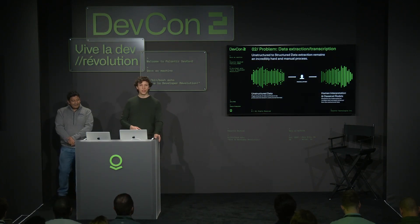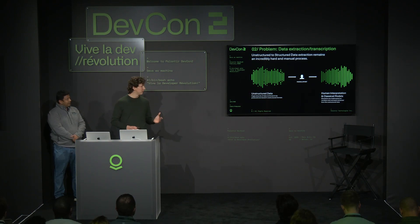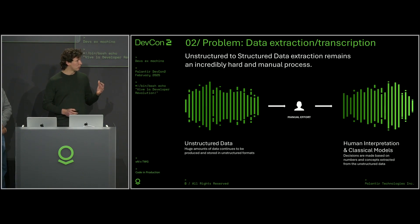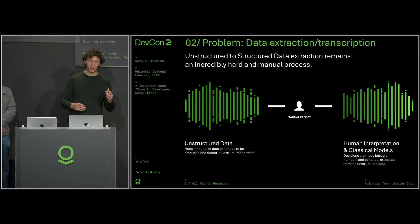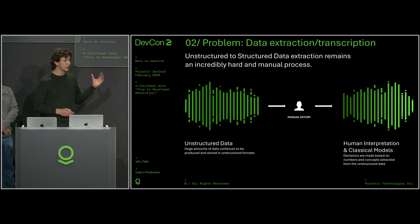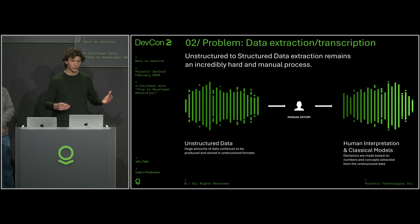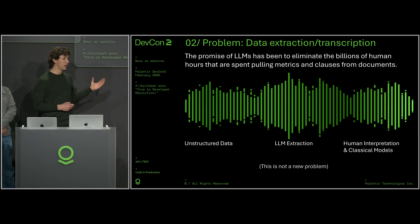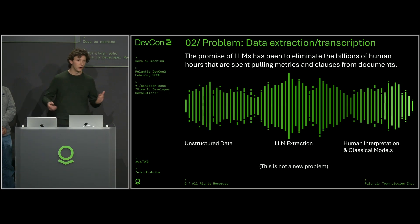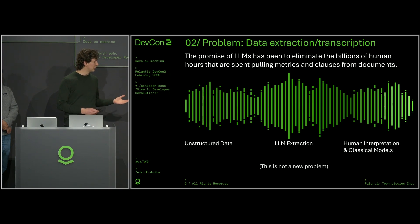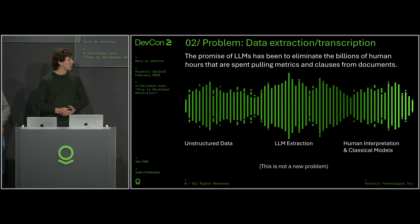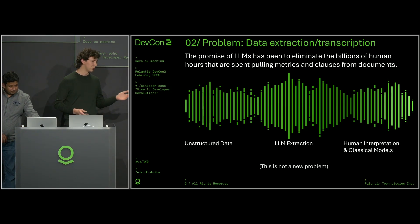As Manoj mentioned, extracting information from unstructured data sources is a big problem pervasive to so many workflows. So many times, to perform this data extraction, a human needs to be involved to interpret it and inject information into the decision-making process. When LLMs came out, the hope was that we could just point them to a massive corpus of documents, give them a task, and it would magically solve it. But here we are in 2025, and this still doesn't magically work. We still have plenty of junior investment banking analysts out there until 3 a.m. plugging data into spreadsheets.